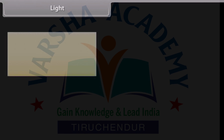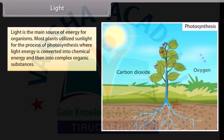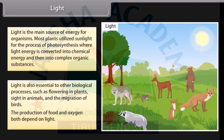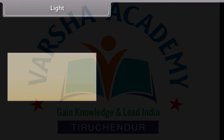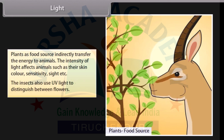Light is also essential to other biological processes such as flowering in plants, sight in animals, and the migration of birds. The production of food and oxygen both depend on light. Plants as a food source indirectly transfer energy to animals. The intensity of light affects animals such as their skin color, sensitivity, and sight. Insects also use UV light to distinguish between flowers.